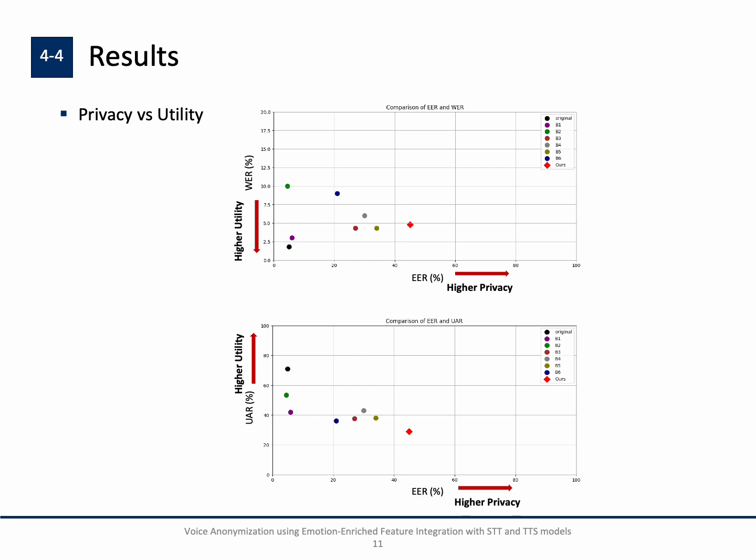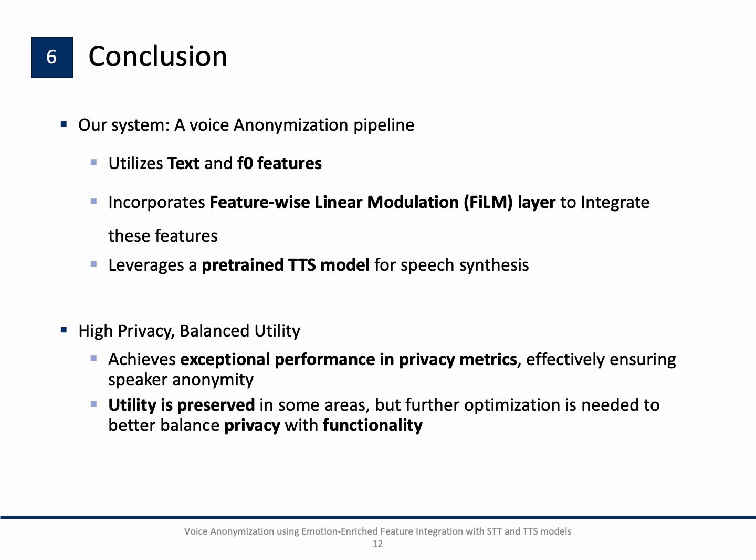In conclusion, our model effectively anonymizes speech, but further improvements are necessary to enhance utility without compromising privacy. To summarize, our system is a voice anonymization pipeline that effectively combines text and fundamental frequency features. These features are integrated using a feature-wise linear modulation layer, and the final speech synthesis is performed by a pre-trained TTS model. In terms of privacy, our system shows exceptional performance, significantly outperforming the baselines. However, while utility is preserved in some areas, further optimization will be necessary to find a better balance between privacy and utility.